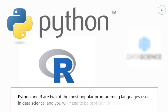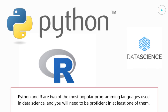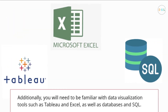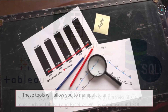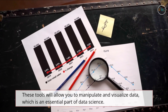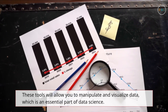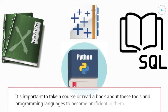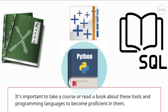1b: Familiarizing yourself with programming languages and data visualization tools. Python and R are two of the most popular programming languages used in data science, and you will need to be proficient in at least one of them. You will also need to be familiar with data visualization tools such as Tableau and Excel, as well as databases and SQL. These tools will allow you to manipulate and visualize data, which is an essential part of data science. It's important to take a course or read a book about these tools to become proficient in them.